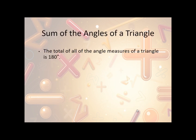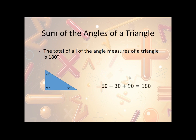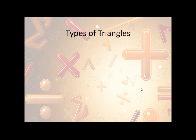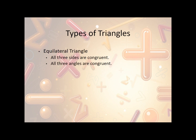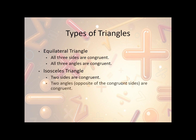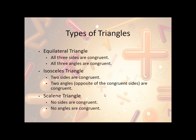One property of triangles states that all angles must add up to 180 degrees. For example, a triangle with angles 90, 60, and 30 degrees sums to 180. Now, the different types of triangles by their sides: an equilateral triangle has all three sides congruent and all three angles congruent. An isosceles triangle has two sides congruent and the two angles opposite those sides congruent. A scalene triangle has no sides congruent and no angles congruent.